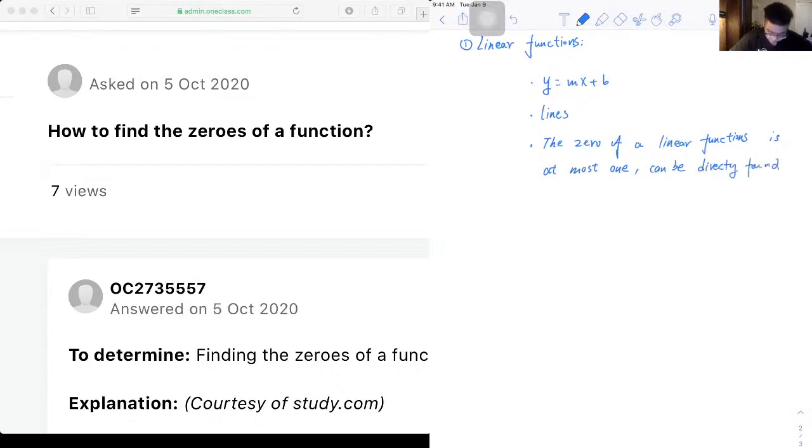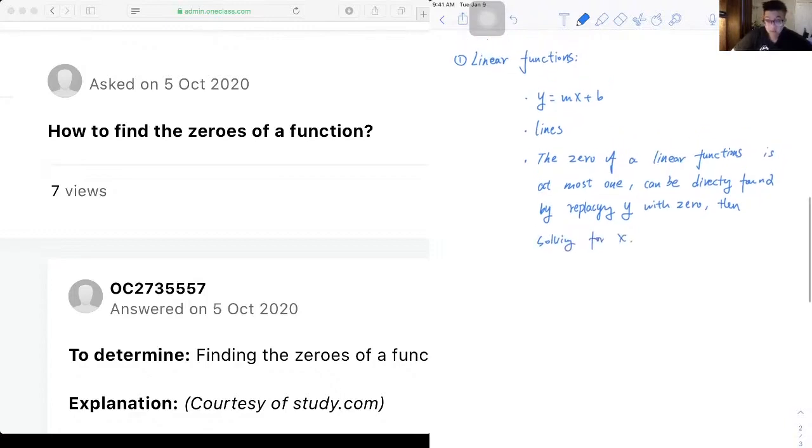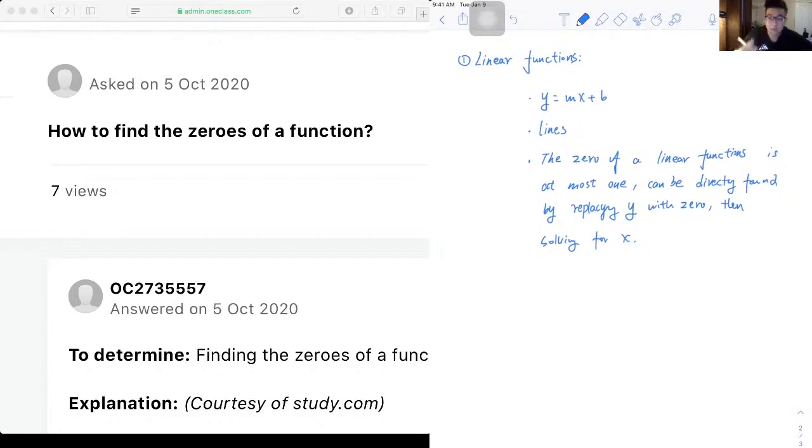It can be directly found by replacing y with zero and then solving for x. So that's how we find zeros if we are given a linear function.